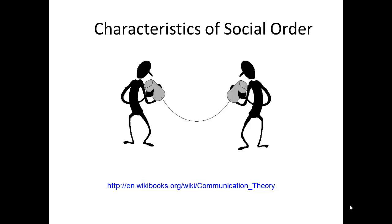Rogers states: "One, senders can be inventors or opinion leaders; two, the message can be a new idea or product; three, channels can be interpersonal or mass communication; four, receivers can be members of a social system; and five, the effects can be an individual's adoption of social change."